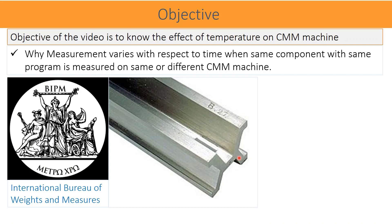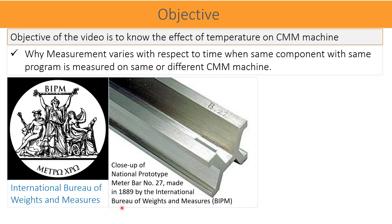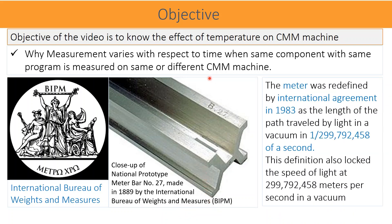Change in length is directly proportional to the temperature and component length. The definition of the standard length of one meter is defined by the International Bureau of Weights and Measures. Previously a physical one-meter master was preserved in 1889. The meter was redefined by international agreement in 1983 as the length of the path traveled by light in a vacuum in 1/299,792,458 of a second, locking the speed of light at 299,792,458 meters per second in a vacuum.